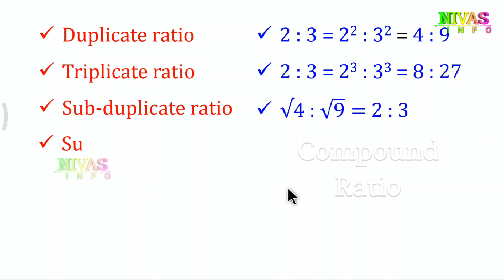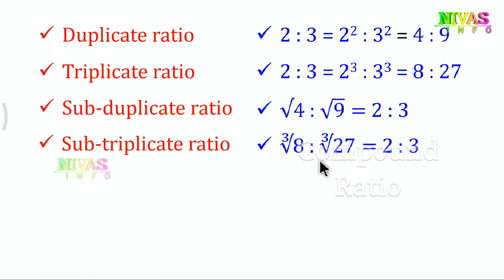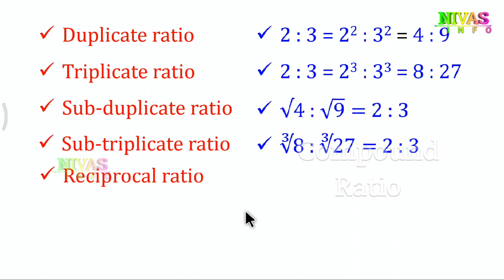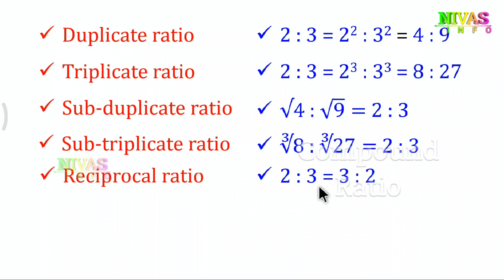Subduplicate ratio: the cube root of 8 is to the cube root of 27 equals 2 is to 3. Then we have reciprocal ratio, which is simple: the first term becomes the second term and the second term becomes the first term — it is the inverse. So 2 is to 3 gives a reciprocal ratio of 3 is to 2.